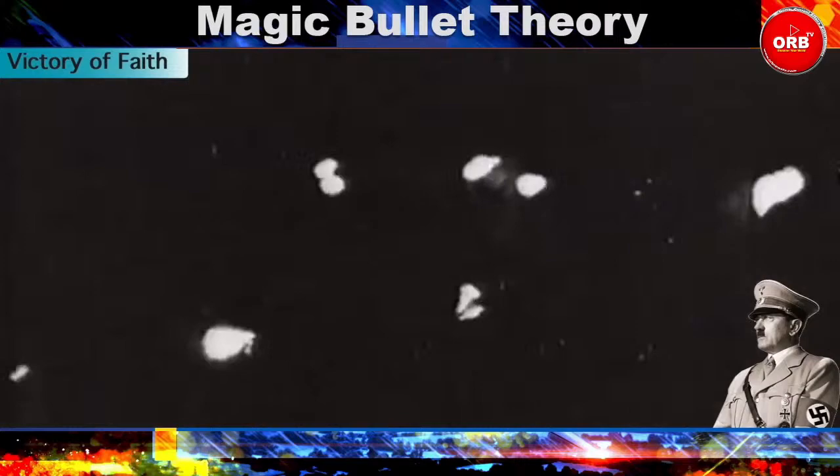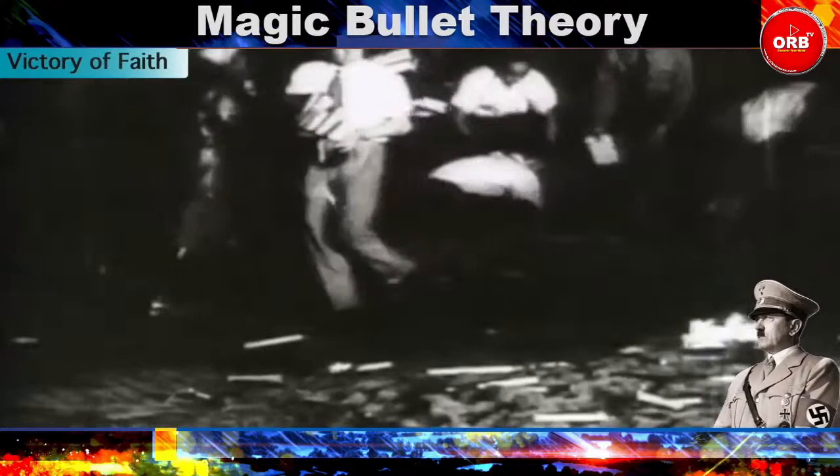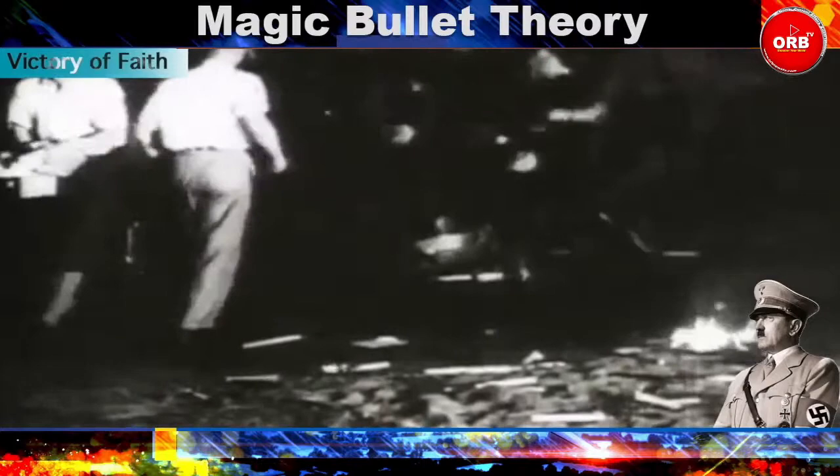Within a month, he had the Communist Party banned. Freedom of speech and freedom of the press were swept away. The transformation of Germany into a Nazi one-party dictatorship had begun.